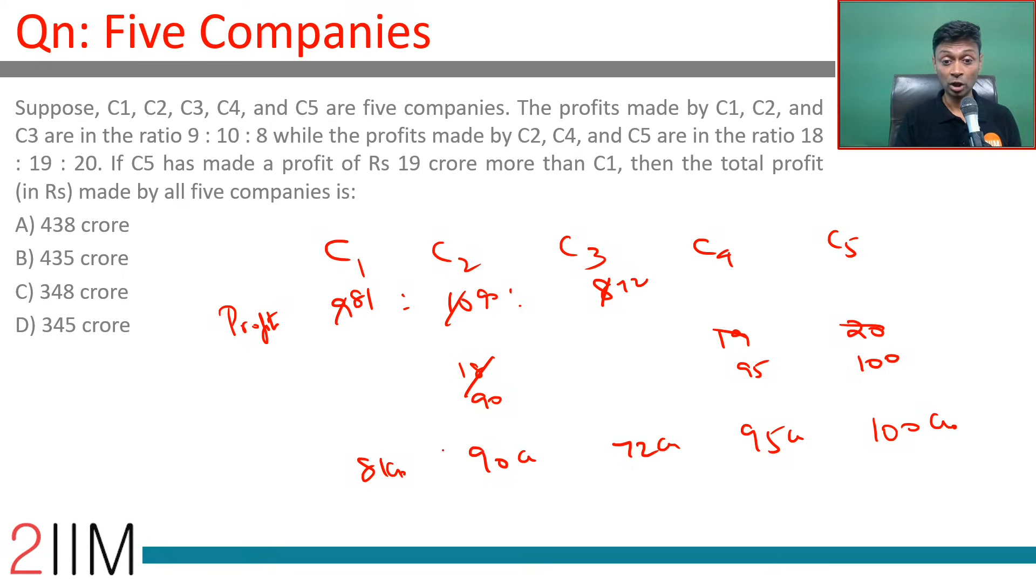Total profit made by all of them put together: the sum of all this. 5 plus 2 is 7, 7 plus 1 is 8, 8 plus 9 is 17, plus 7 is 24, plus 9 is 33. 438 crore, choice A.